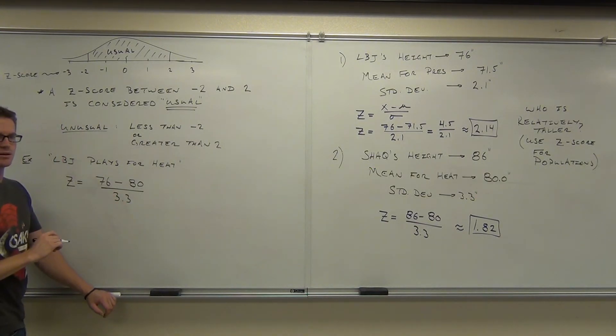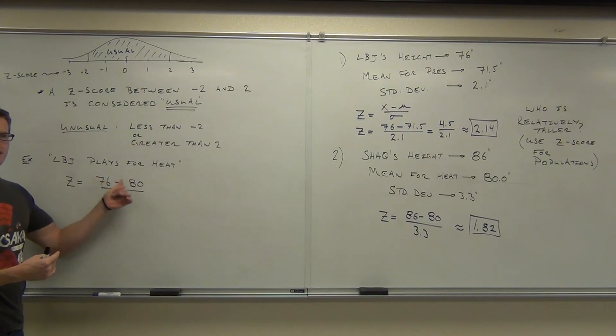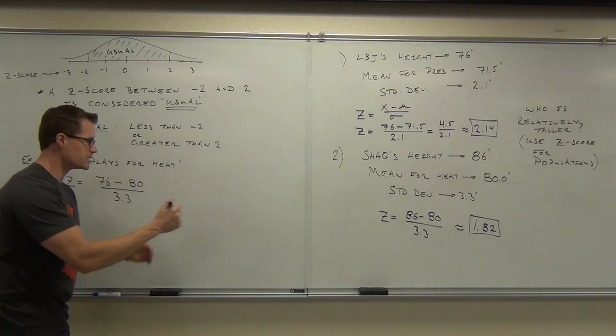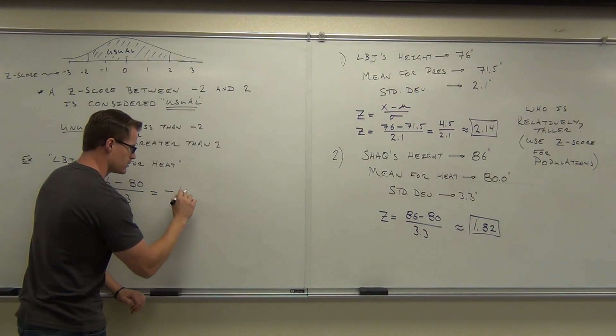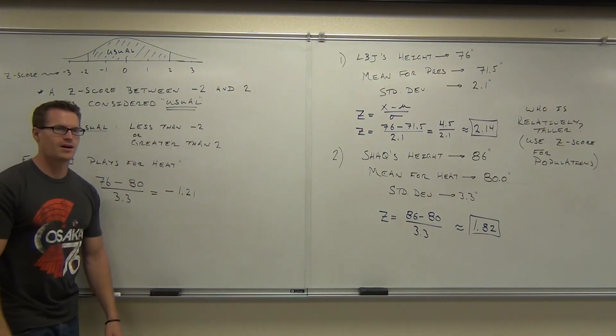Divided by the same standard deviation of 3.3. Has anyone done that already? Yeah. What do you get? Negative? Oh, negative. What's negative mean again? He means, yeah, he's less than the mean. Clearly, he was, right? Notice how we have to do this in this order. Otherwise, you'd get a positive implying LBJ would be higher than average when he's not for the Heat. So, here we get, what did you say again? Negative 1.21.